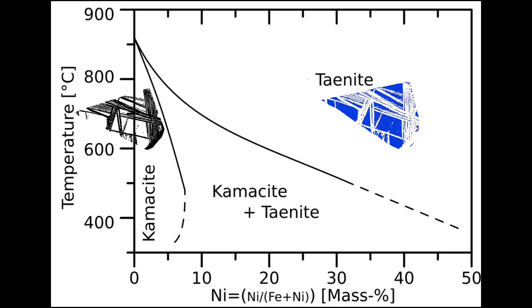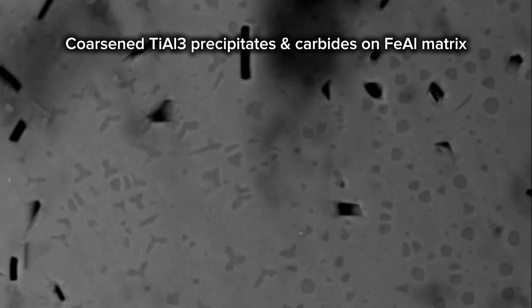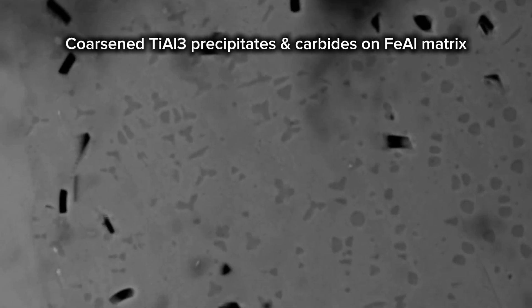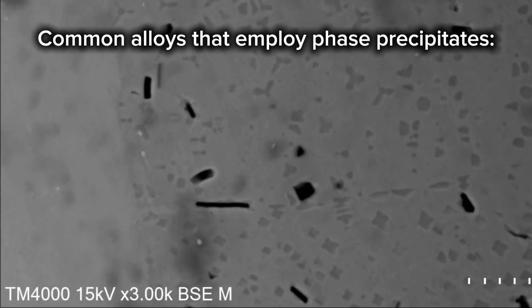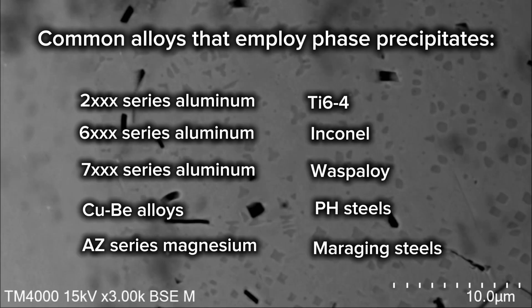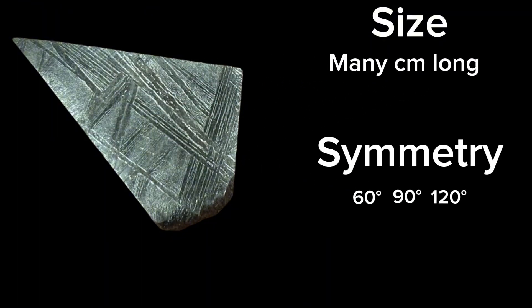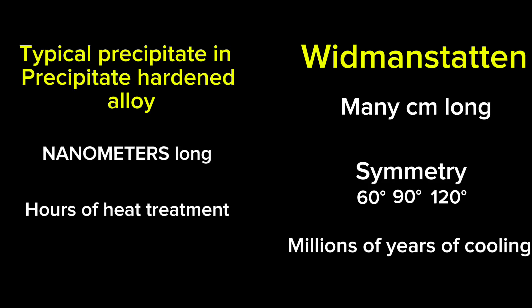Meteorite Widmanstätten is a really neat dual-phase structure of taenite and kamacite, two different phases of iron and nickel. Producing dual-phase or even tri-phase microstructures within metals is actually incredibly easy — we do it all the time in essentially every alloy. The issue with creating a structure like Widmanstätten is that the size and symmetry of the pattern is only possible to attain with incredibly slow cooling rates — we're talking millions of years.